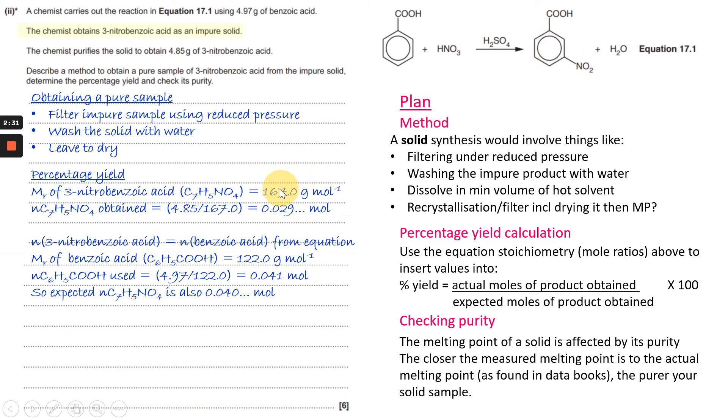That's 167 grams per mole. So that means the number of moles of that obtained, because they tell you that the chemist purifies the solid to obtain 4.85 grams of it, you divide the 4.85 grams by 167 to give 0.029.